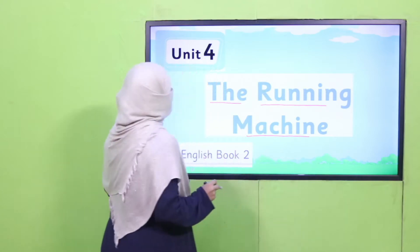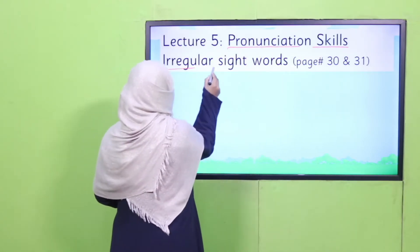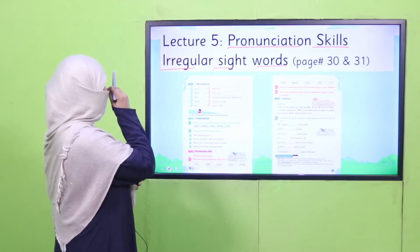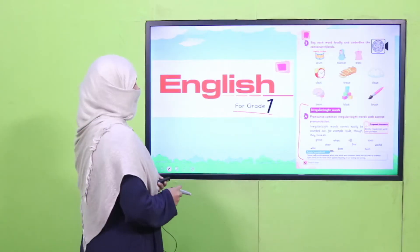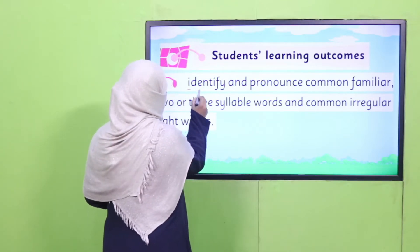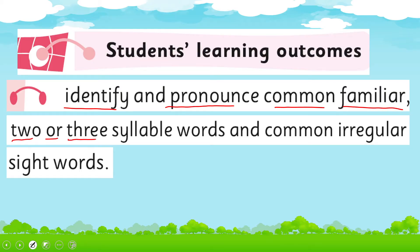Today's lecture 5, under the title of Pronunciation Skills, we learn about irregular sight words and we'll cover page numbers 30 and 31 of your book. In your previous class, English for Grade 1, I taught you about irregular sight words. Today we learn further and will cover the SLO: to identify and pronounce common familiar two or three syllable words and common irregular sight words.